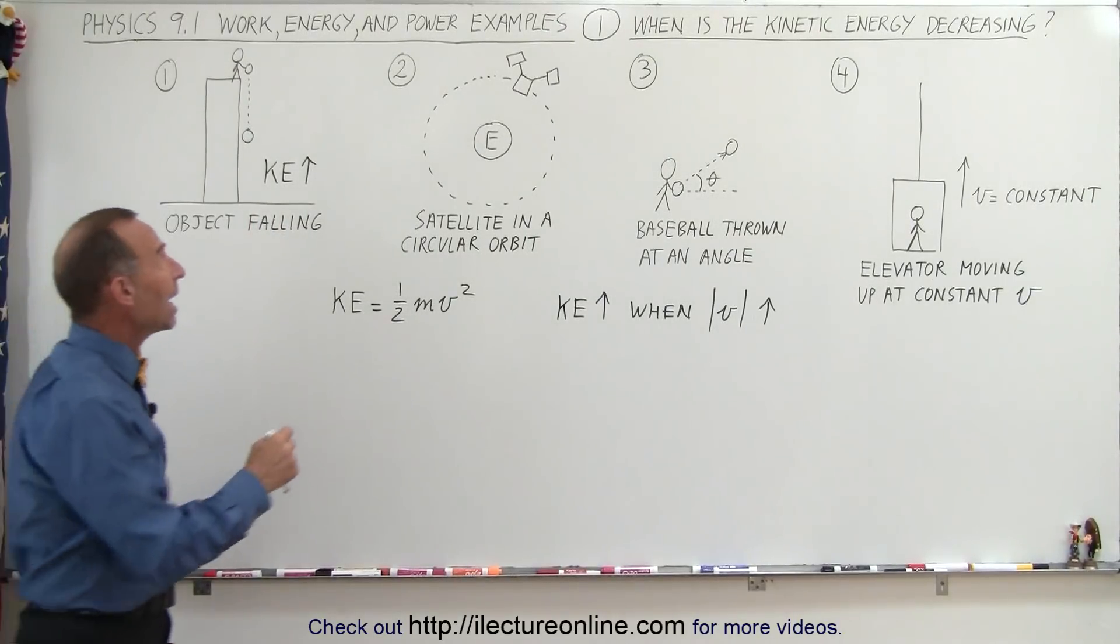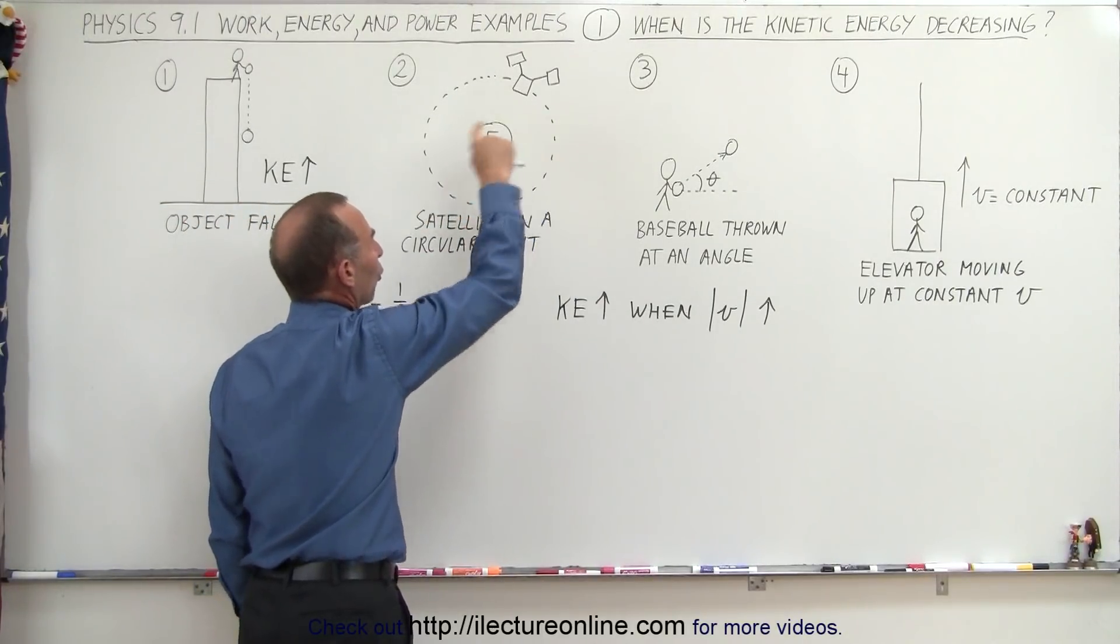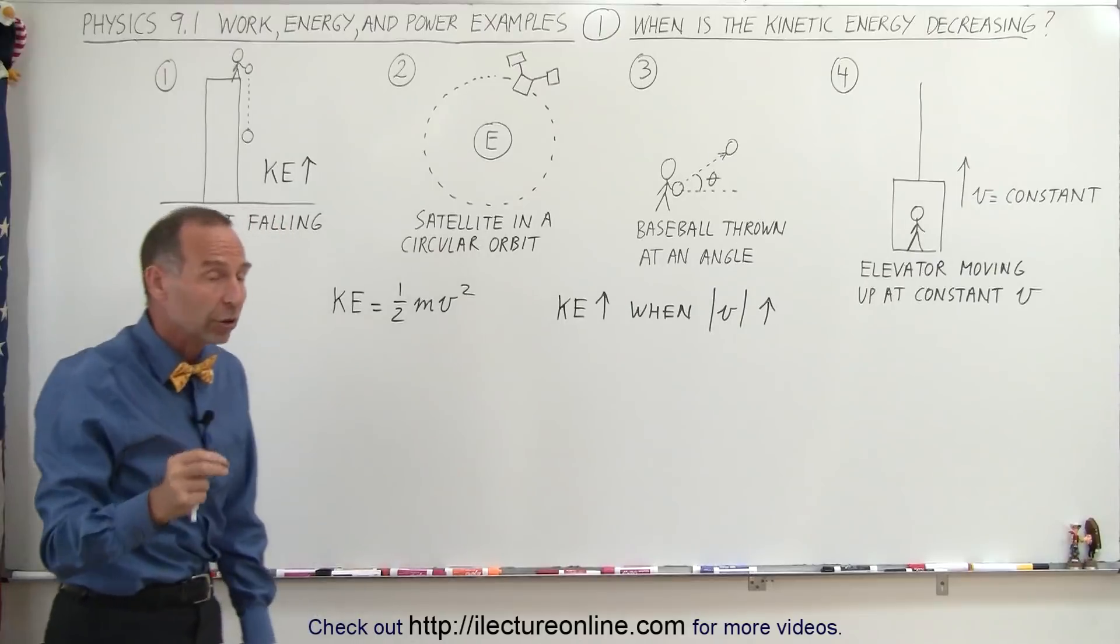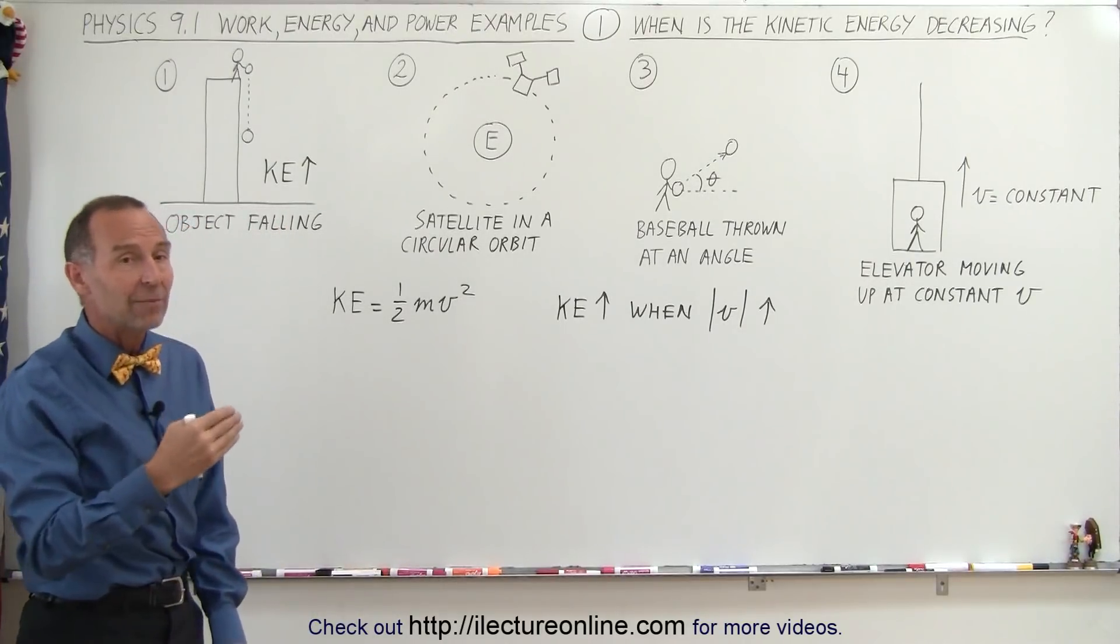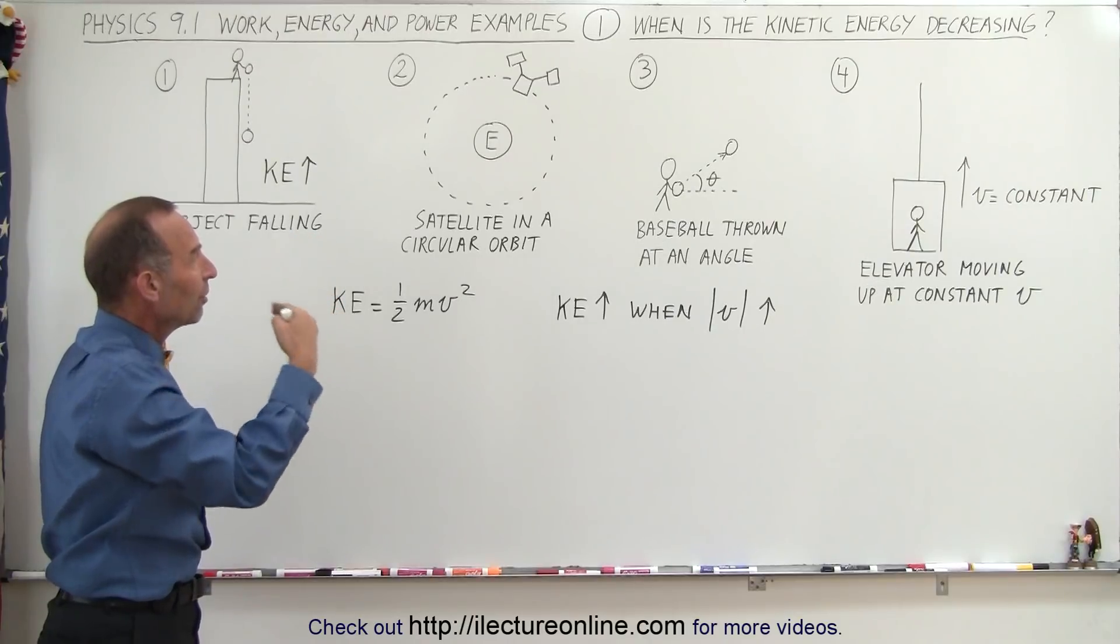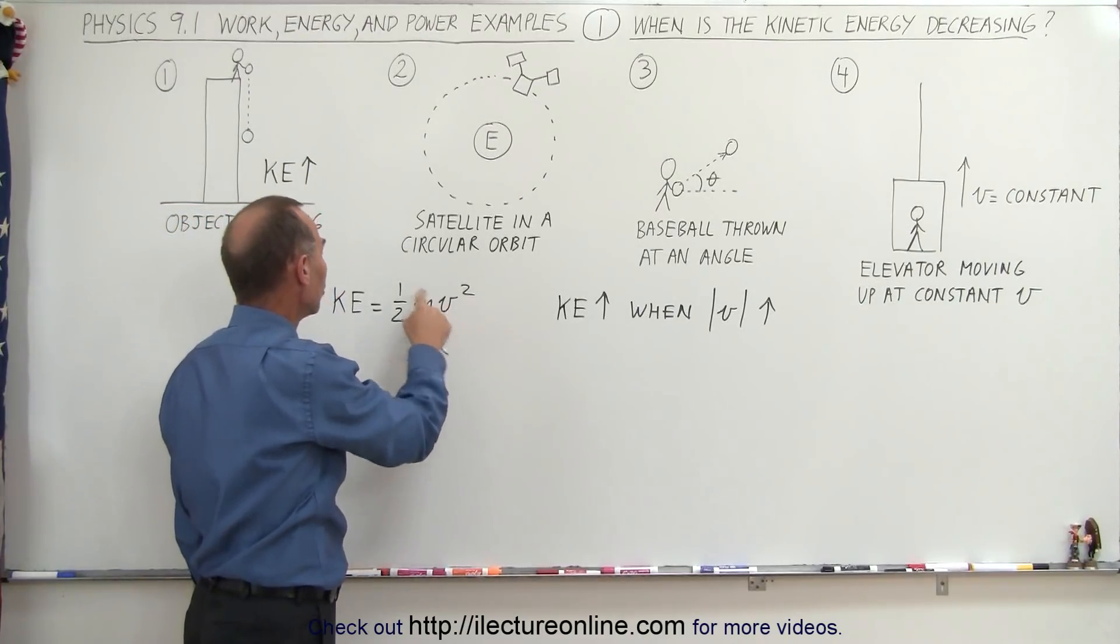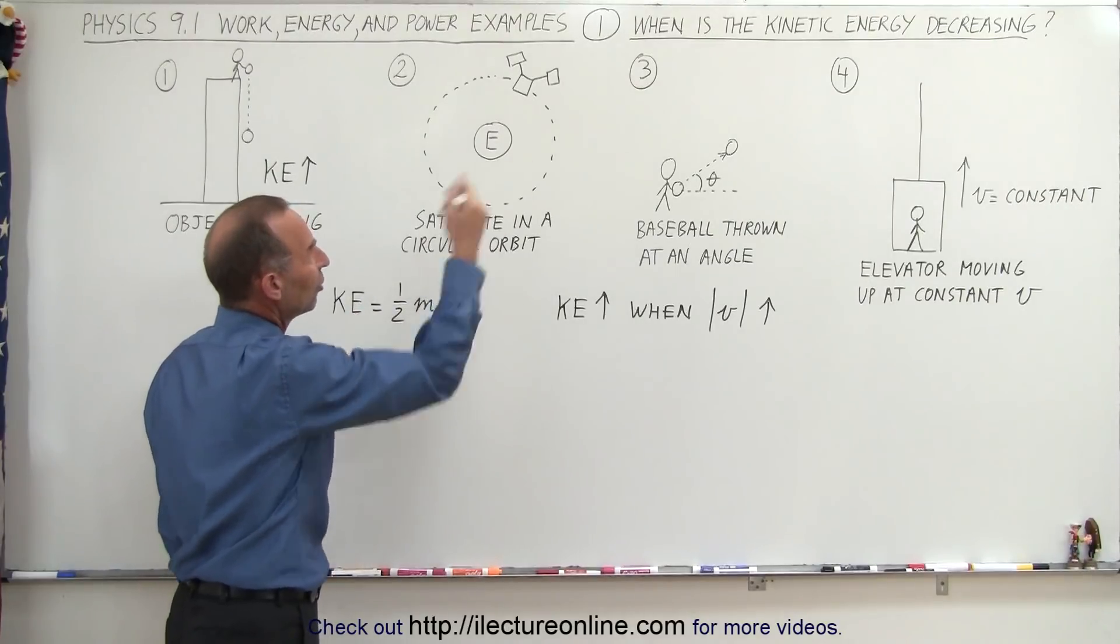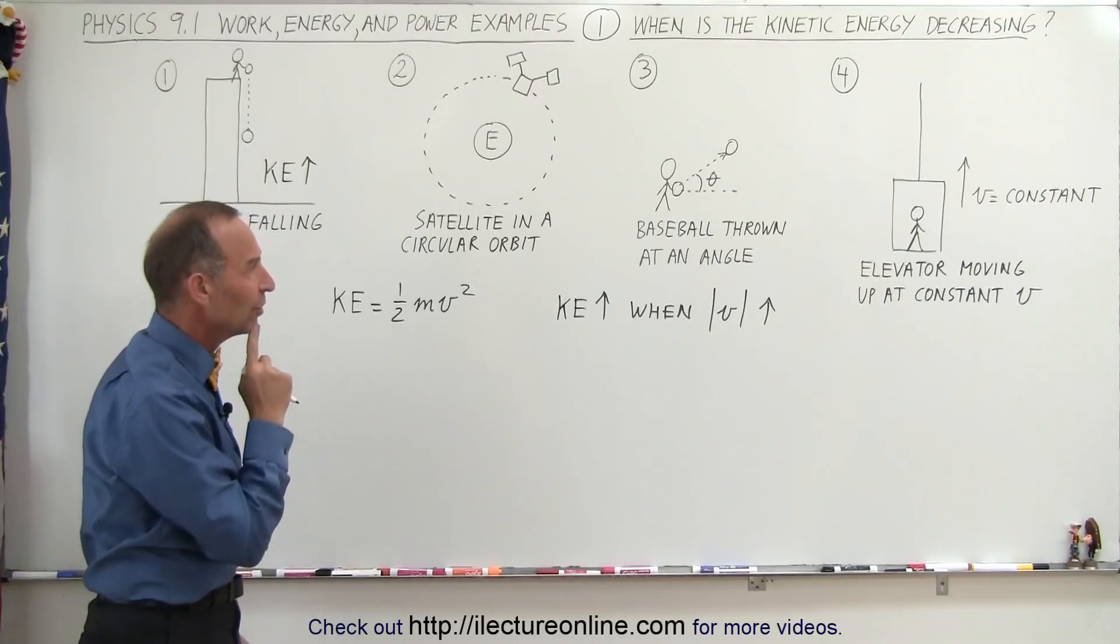In our second example, we have a satellite which is orbiting the Earth in a circular orbit. Since the orbit is circular, the magnitude of the velocity always stays the same. The direction always changes, but the magnitude of the velocity stays the same. So if there's no change in the velocity, there will be no change in the kinetic energy. So again, case 2, we don't have a decrease in kinetic energy.